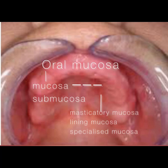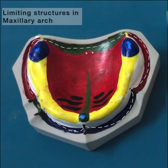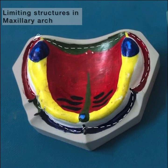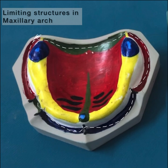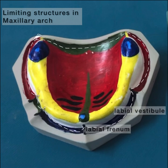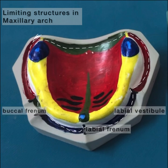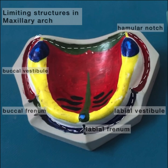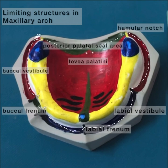Now let's see the limiting structures that define the periphery or the boundaries of a denture. They are: the labial frenum, the labial vestibule, the buccal frenum, the buccal vestibule, the hamular notch, the posterior palatine seal area, and the fovea palatinae.